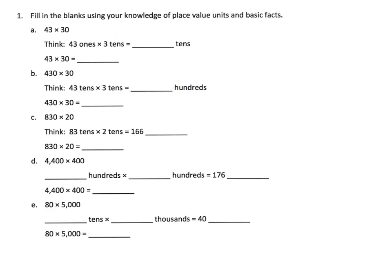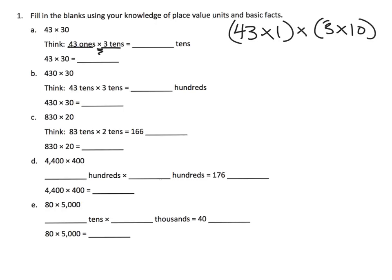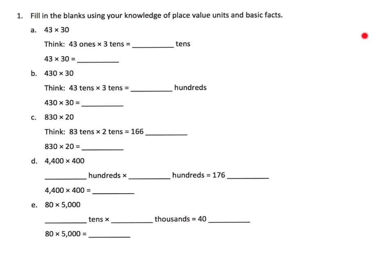Let's start with part a: 43 times 30. They want us to think about this as 43 ones times 3 tens. So 43 ones is another way of saying 43 copies of 1, times 3 tens — meaning 3 copies of 10. That's the mathematical way of explaining what is going on.